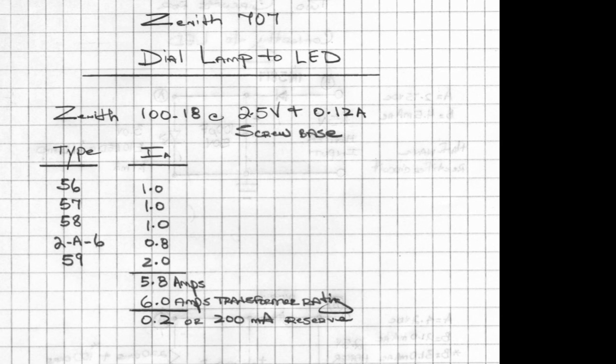...was rated at 2.5 volts at 120 milliamps with a screw base. On the left-hand side here, I have all the tube types listed and their current consumption, which leaves us a reserve of about 200 milliamps.